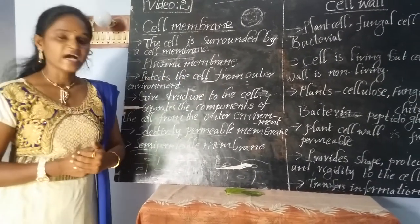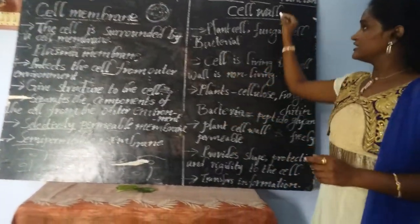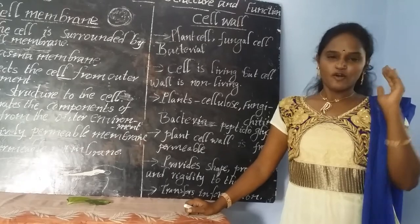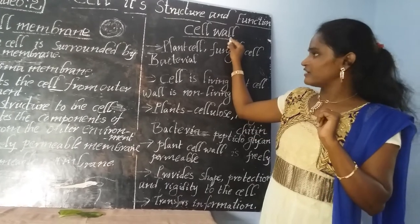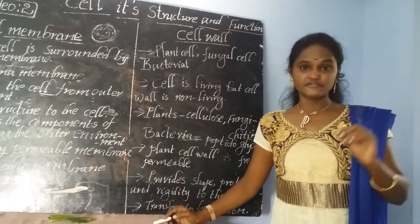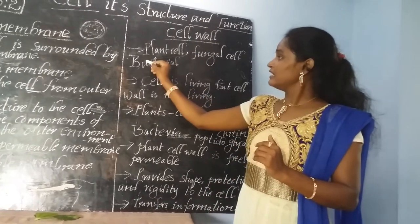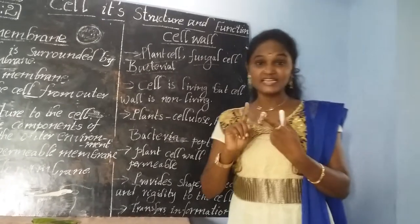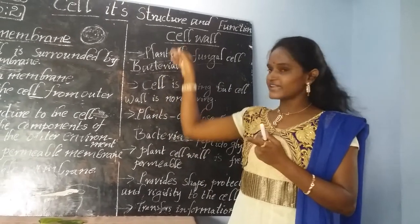Now it is time to discuss about the cell wall. While discussing the cell wall, you may note that most cells do not contain a cell wall — only specific types of cells contain cell wall. What are those specific cells? Plant cells, fungal cells, and bacterial cells. Plant cells contain cell wall, fungal cells contain cell wall, and bacterial cells contain cell wall.